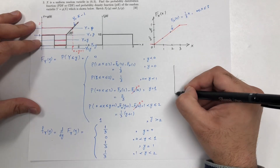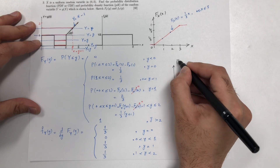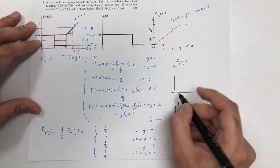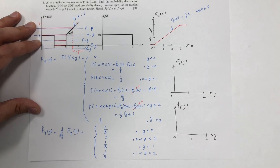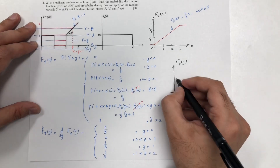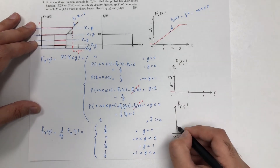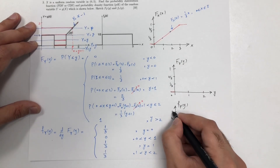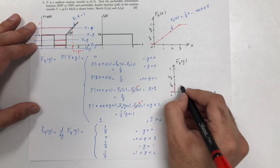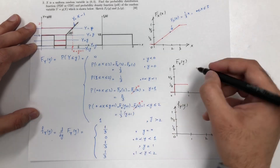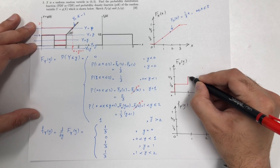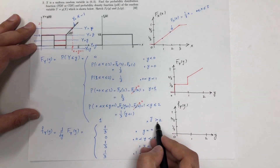Now we sketch the distribution function F_Y(y). Below 0 it is 0. Between 0 and 1 it remains at 1/3. At y equals 1 it jumps to 2/3. Between 1 and 2 it follows the linear function (1/3)(y+1), which is a straight line going up to 1. After y equals 2, it stays at 1.